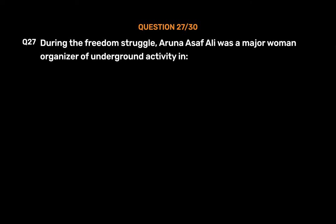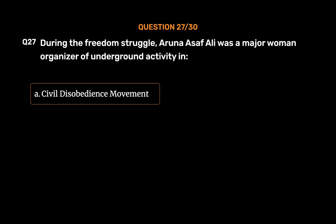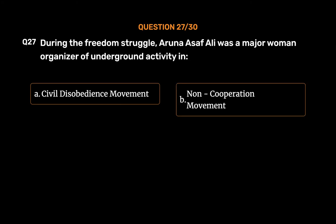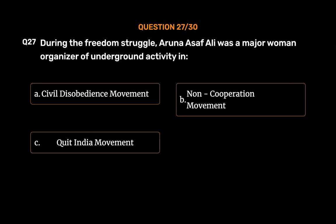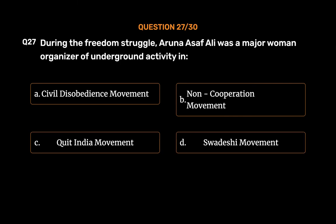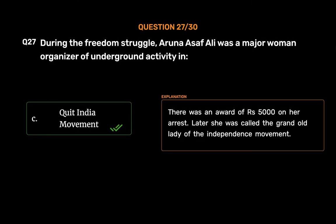Question No. 27. During the Freedom Struggle, Aruna Asaf Ali was a major woman organizer of underground activity in which movement? Option A, Civil Disobedience Movement; Option B, Non-cooperation Movement; Option C, Quit India Movement; Option D, Swadeshi Movement. The correct answer is Option C, Quit India Movement. There was an award of Rs. 5,000 on her arrest. Later she was called the Grand Old Lady of the Independence Movement.